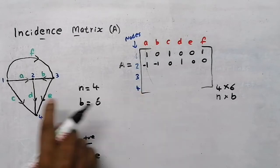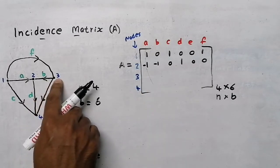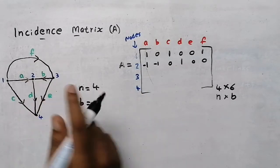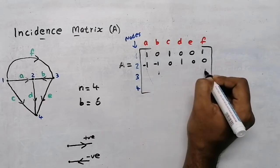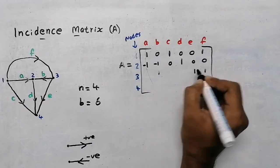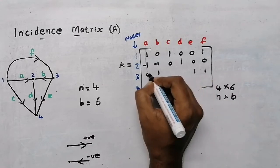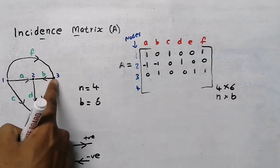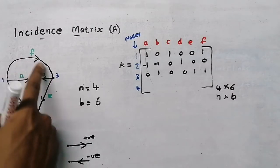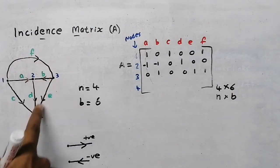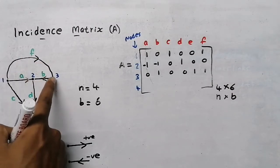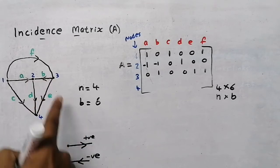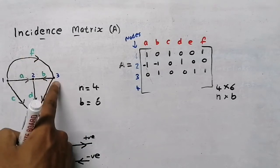Now for node 3: branches b, f, and e are connected, so near b, f, and e put 1, and the remaining put 0. For the sign: b is moving away from node 3, so it is positive (+1); f is coming into node 3, so it is negative (−1); e is moving away, so it is positive (+1).